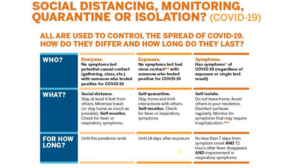To sum up: everyone should practice social distancing until the pandemic ends. Persons exposed to COVID-19 patients should self-quarantine, self-monitor, and check for fever and other respiratory symptoms for 14 days after exposure. Persons who are symptomatic — with fever, cough, and respiratory symptoms — should self-isolate in hospitals. Isolation should last no less than 7 days from symptom onset, and at least 72 hours after fever disappears, along with improvement in respiratory symptoms and two negative COVID-19 test results.